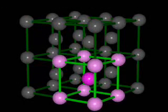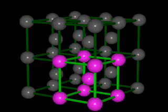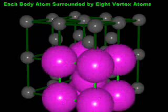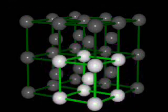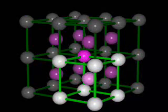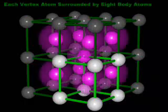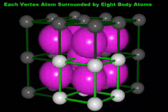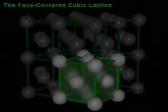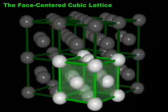The coordination number of the body-centered cubic cell is more obvious. Any body atom touches eight vertex atoms for a coordination number of eight. The coordination number for a particular structure is the same regardless of which atom is chosen. Therefore, we can also say that each vertex atom is surrounded by eight body atoms, again giving a coordination number of eight.